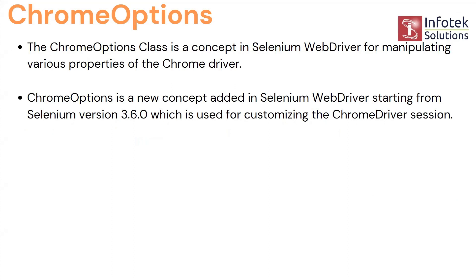Chrome Options is used for manipulating various properties of Chrome Driver. The properties of Chrome Driver that are not readable, or where Chrome Driver missed certain properties — those properties are handled by Chrome Options. Chrome Options is a new concept added in Selenium WebDriver starting from Selenium version 3.6.0, which is used for customizing the Chrome Driver sessions. In Chrome Driver we have different sessions.